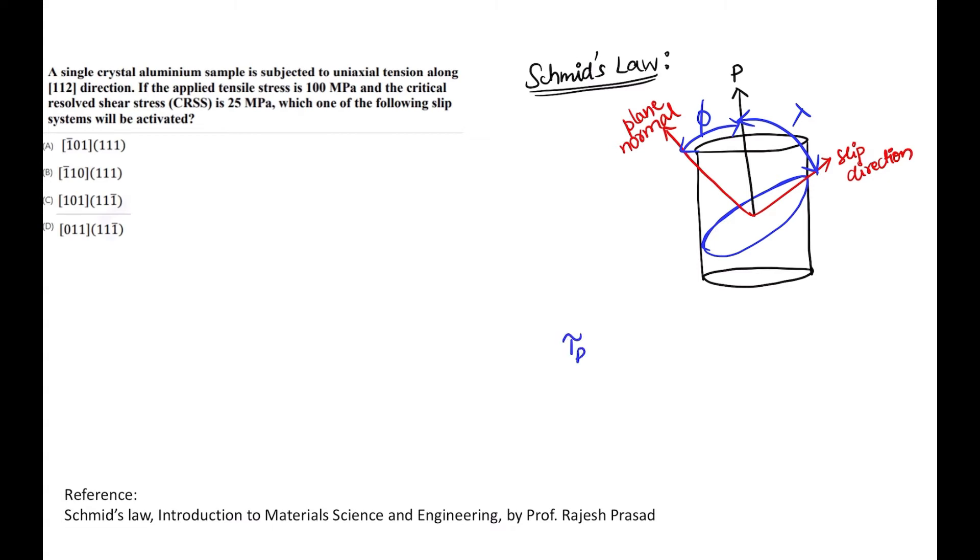From here you can easily get CRSS tau is nothing but sigma cos phi cos lambda. What is sigma? Sigma is nothing but the stress that you are applying here, due to this you get sigma which is P by A. So let's say this is the area A naught. This is what you will be getting if you take the components over it and do basic trigonometry operations. Now this is a CRSS value for a given plane which has an orientation with the angles phi and lambda respectively.